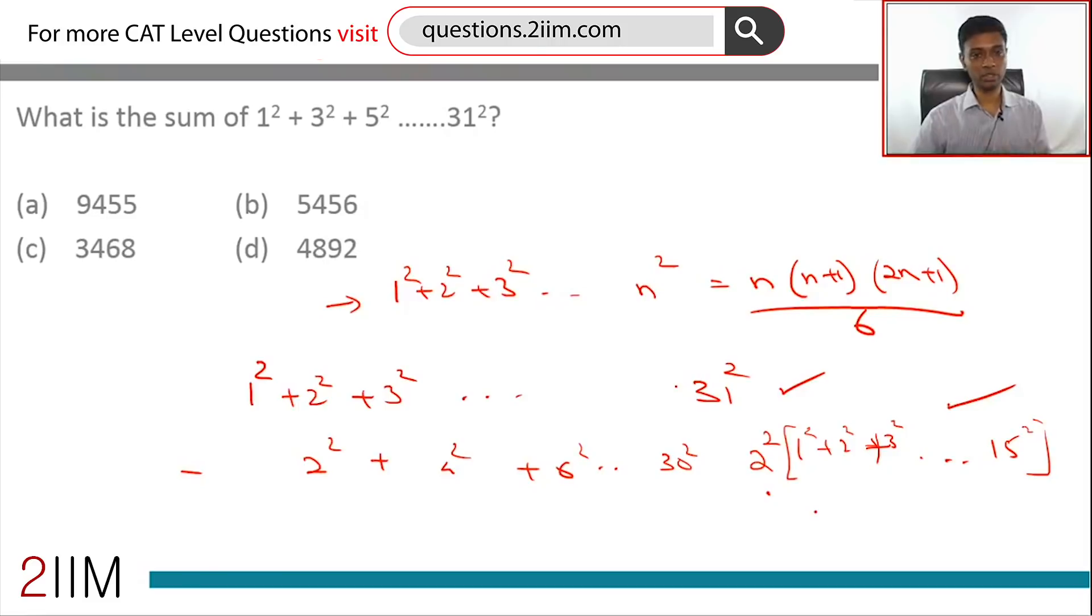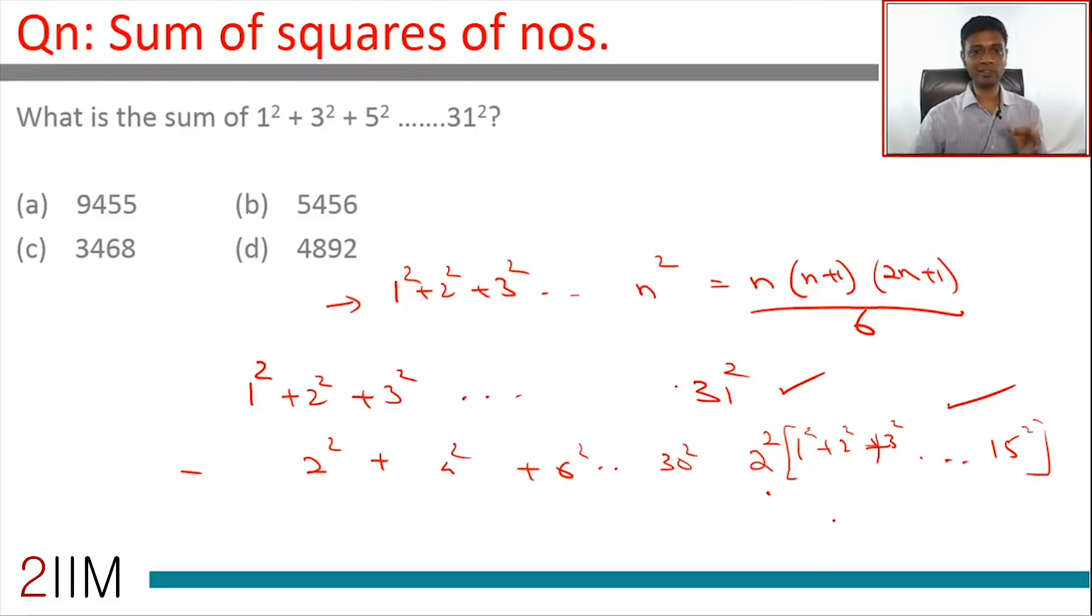I'm going to do the entire calculation, but this is the idea: sum of squares of natural numbers till n we know. For odd natural numbers, find all the sum, subtract all the even numbers. Once you extract 2², this also becomes sum of natural numbers.